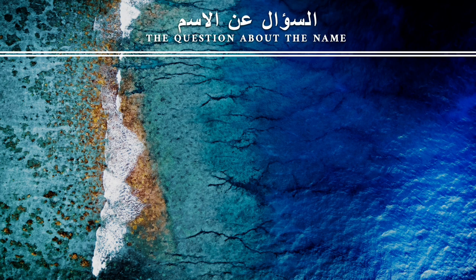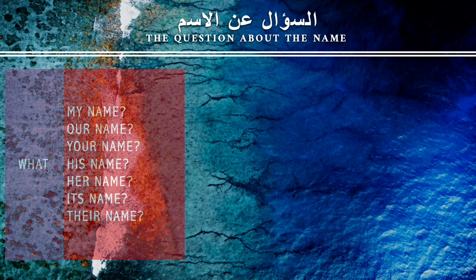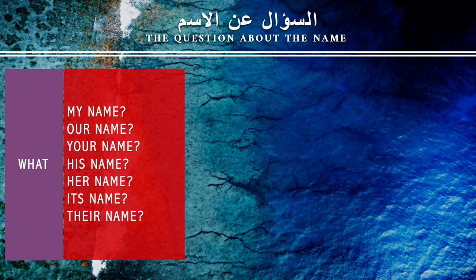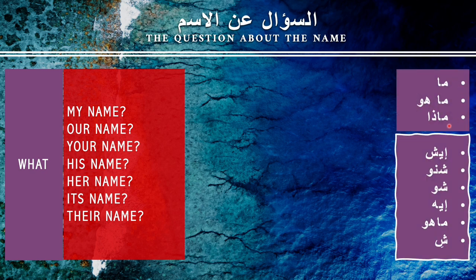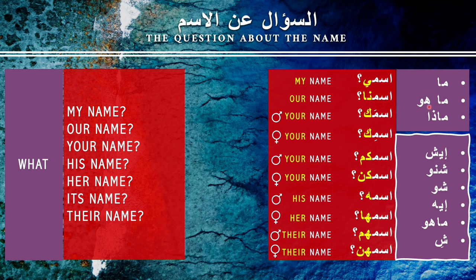Since we now have the collection of words needed to ask a question about the name, let's do it. Starting with the singular format, in standard Arabic: 'ma ismi' — what is my name? 'Ma huwa ismuna' — what is our name? 'Ma huwa ismaka' — what is your name to a masculine singular? 'Ma huwa ismuki' — to a feminine singular. 'Ma huwa ismukum' — your name, what is your name for plural or formal? 'Ma huwa ismuhunna' — speaking to plural feminine. 'Ma huwa ismuhu' — what is his name? 'Ma huwa ismuha' — what is her name? 'Ma huwa ismuhum' — what is their name, masculine or formal? 'Ma huwa ismuhun' — for a feminine plural group.